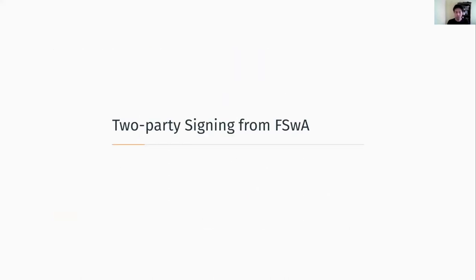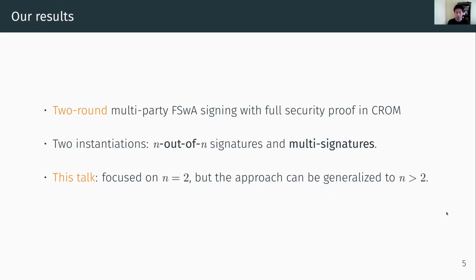Now let's talk about the actual two-party signing protocol. Our results can be essentially summarized as follows. In the paper, we present a two-round multi-party Fiat-Shamir with abort signing with a full security proof in the classical random oracle model. We present two instantiations: n-out-of-n signatures and multi-signatures. In this talk, I'm mainly talking about n-out-of-n signatures, and for simplicity I'm going to assume the number of parties is two. But the approach can be generalized to an arbitrary number of parties by appropriately adjusting the parameters.